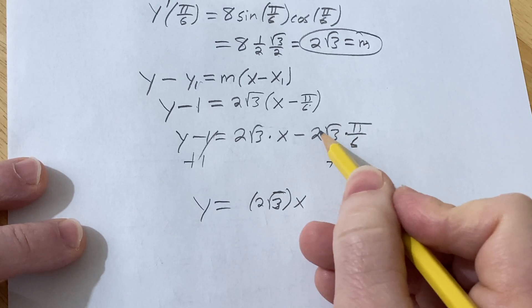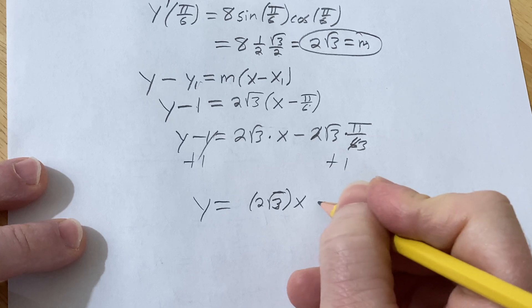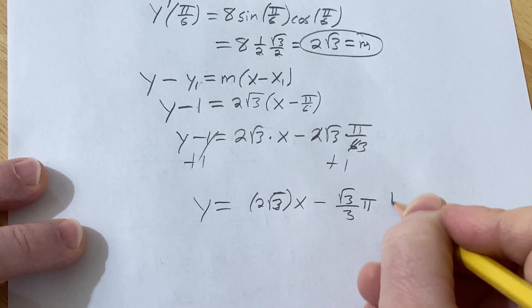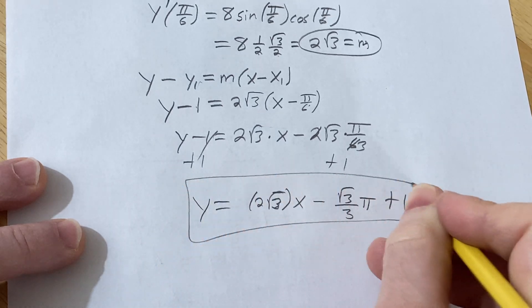Here we can simplify a little bit. The 2 goes into the 6 three times, so you get -√3/3·π and then we have plus 1.